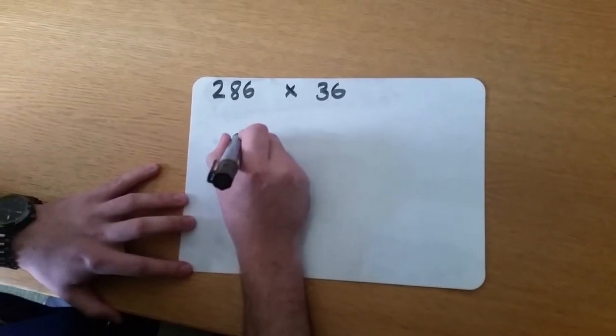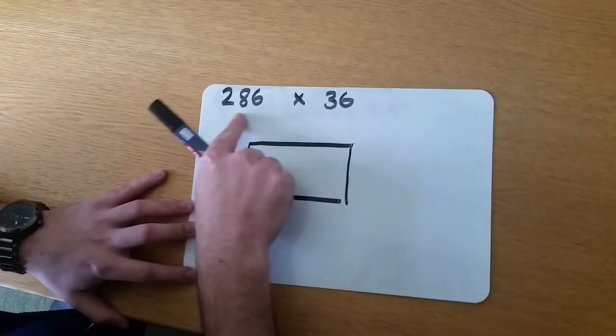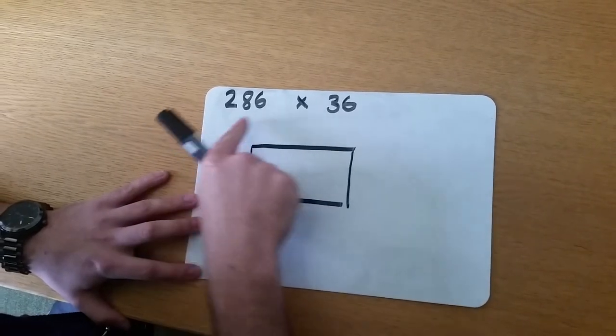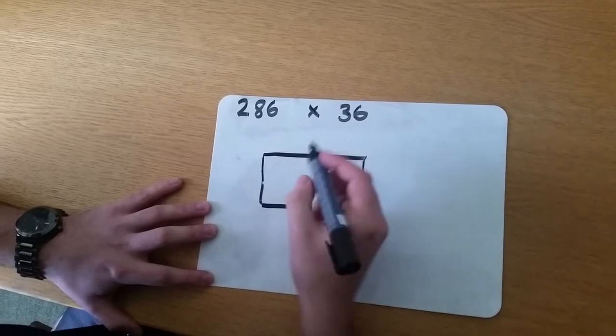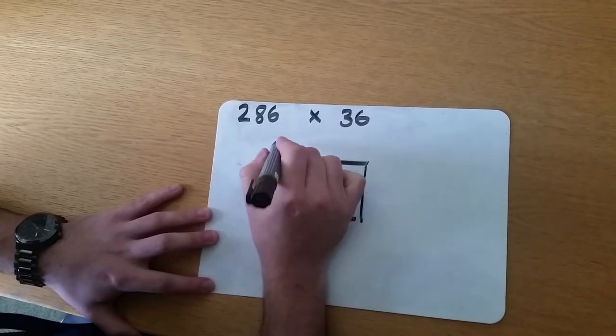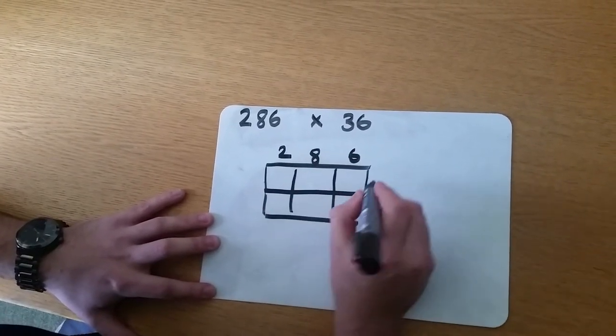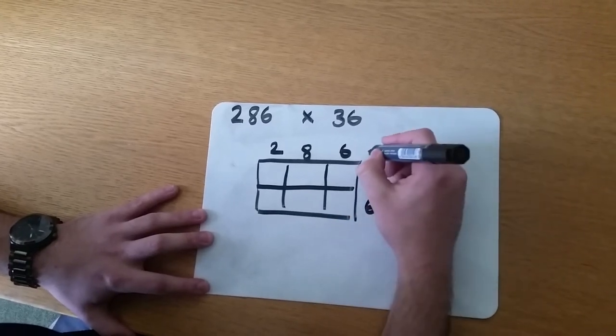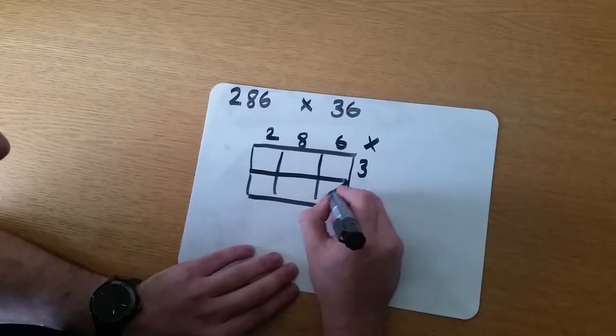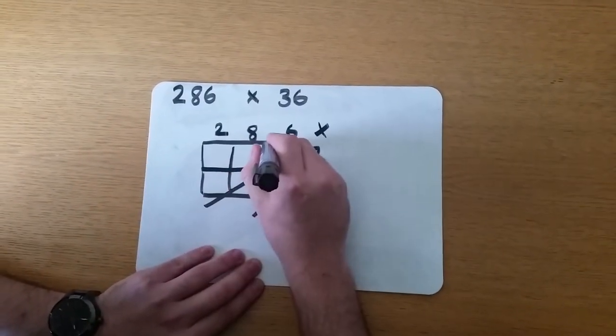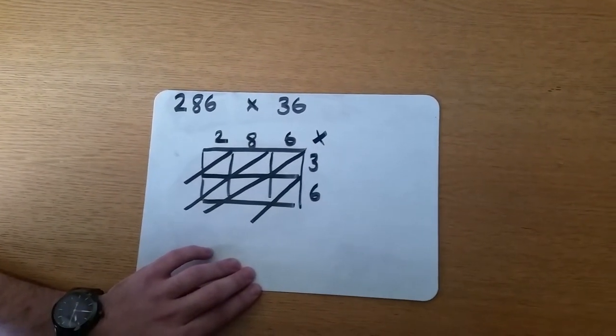We're going to start off by drawing a box. The size of the box depends on the size of the sum. This here is a three digit number times by a two digit number. We're going to need a three by two box. We're going to write 286 across the top and down the side we're going to write 36. I'm just going to write the times here, just to remind myself that we're multiplying. To finish off our method, we're going to draw diagonals down to the box, and those diagonals will separate our tens and units.